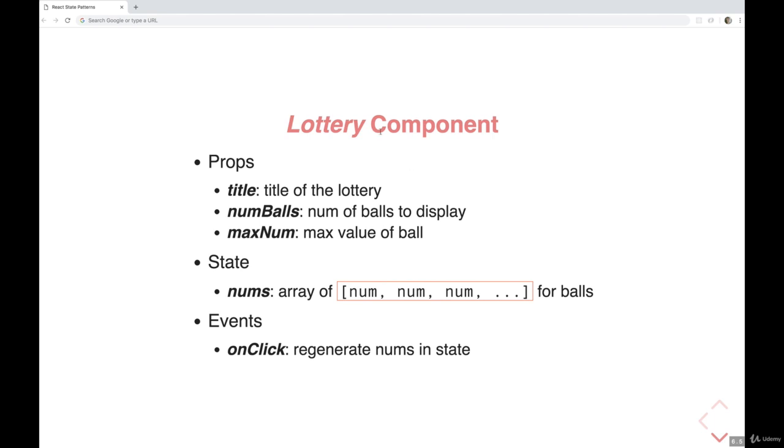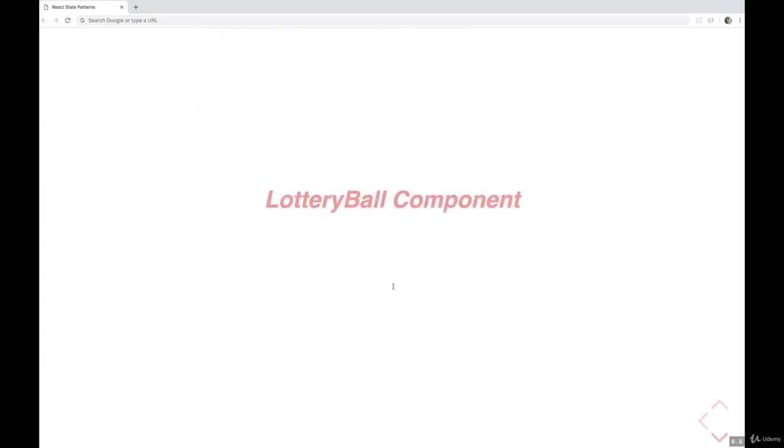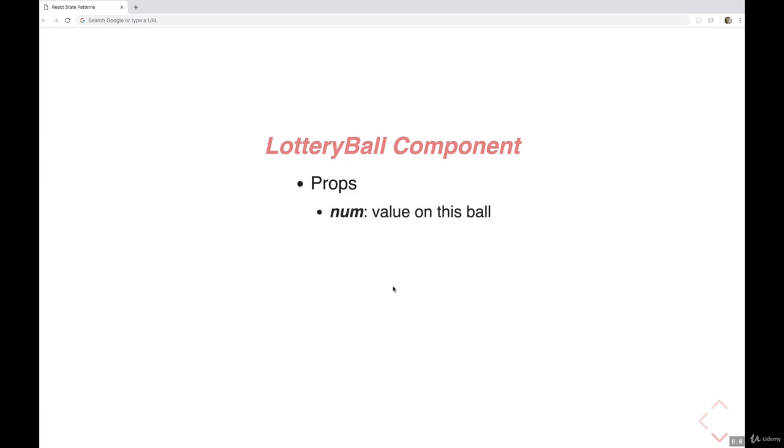But then the render method of our lottery component is going to take these numbers and pass them in from the state as props to our lottery ball component. And our lottery ball component, all it needs is a prop called num. So we pass in that number, and it will display it correctly.